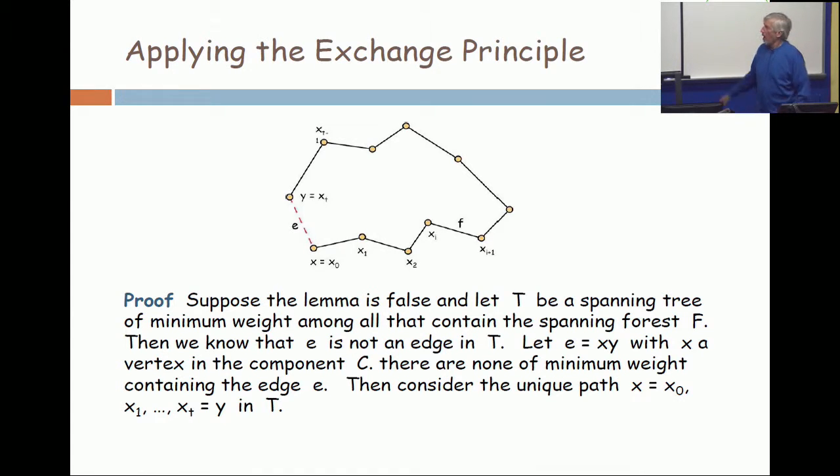Now imagine that you start at vertex X and walk along that path in the optimum tree. You start in the component C, and you end not in C. So as you walk along, you might be in C, not C, alternating back and forth.